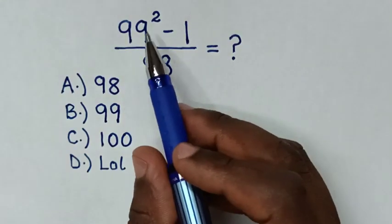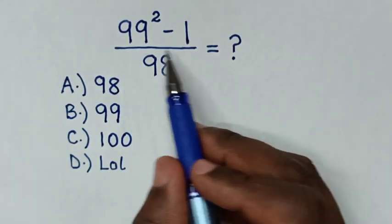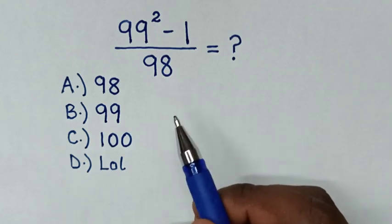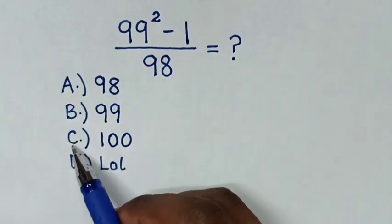Hello! How to solve 99 square minus 1 over 98? By selecting the answers in A, B, C, or D.